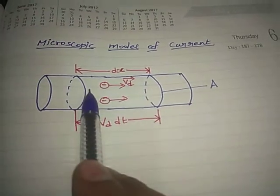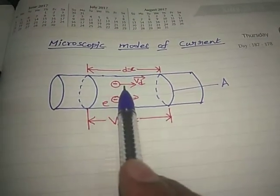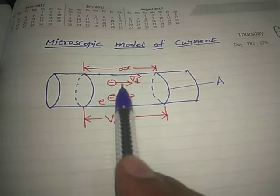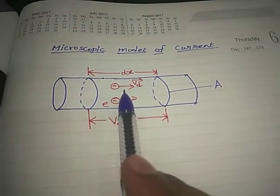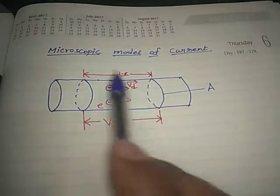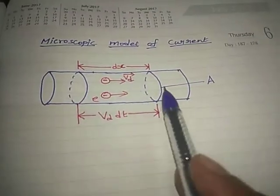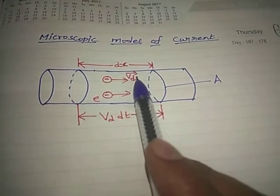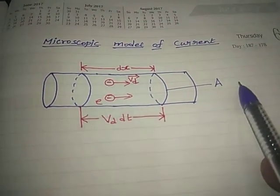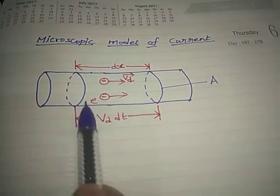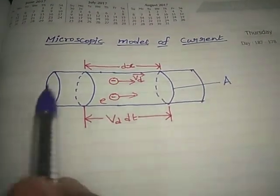Due to the electric field applied right to left, the electrons accelerate and move from left to right. They move with a constant drift velocity VD vector. A is the area of cross section, and the electrons move from left to right because the electric field is directed right to left.